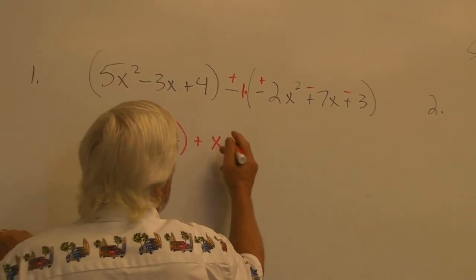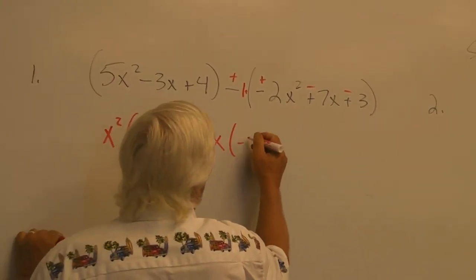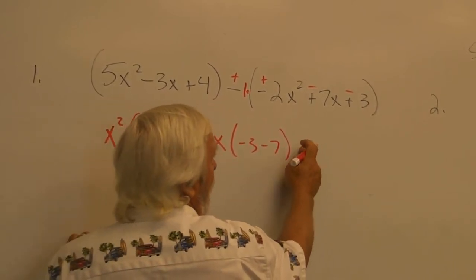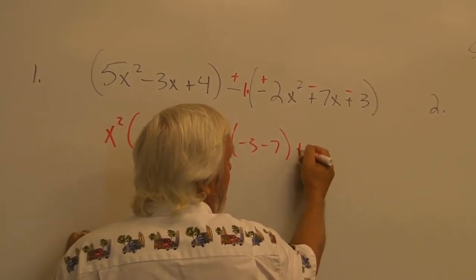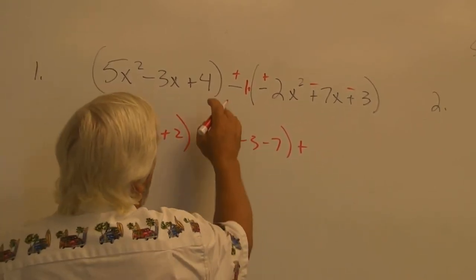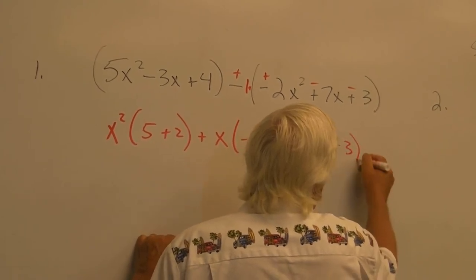You have x's. You have minus 3 and minus 7. Then you have numbers. Always a plus sign. Then you have numbers: 4 minus 3.